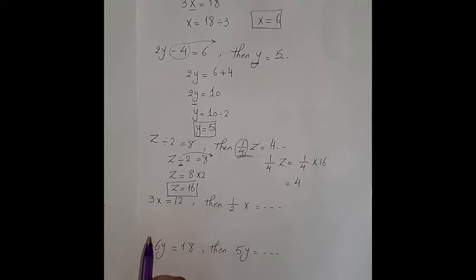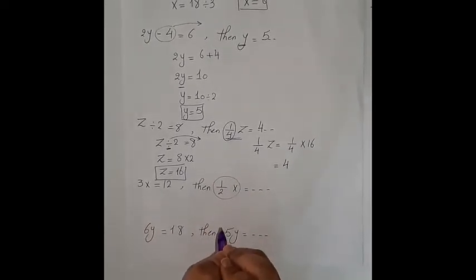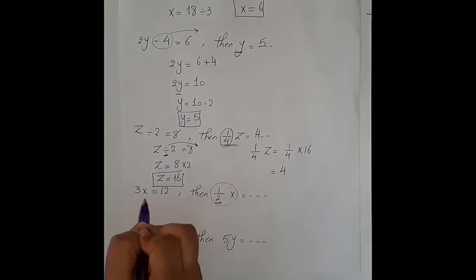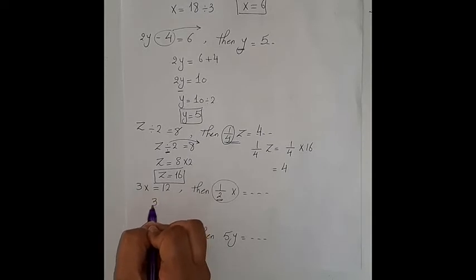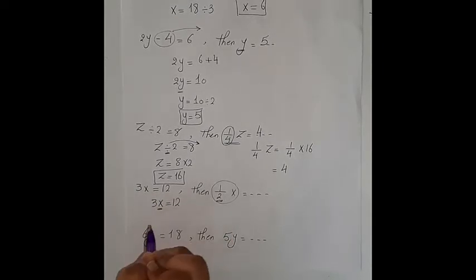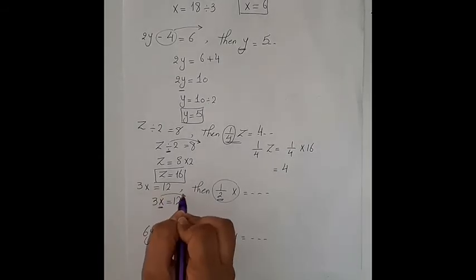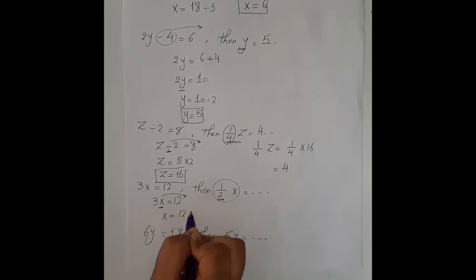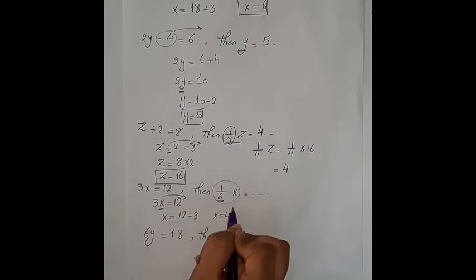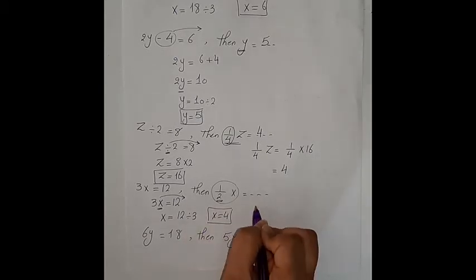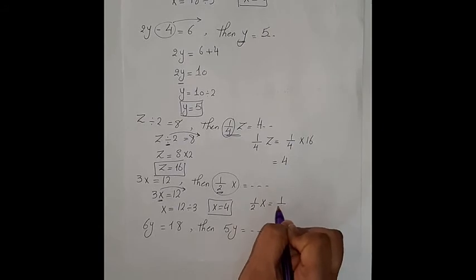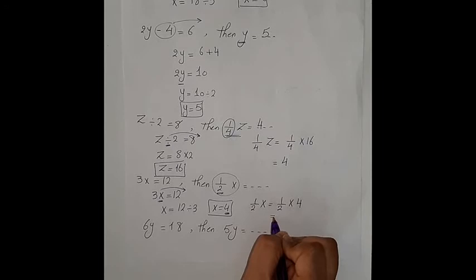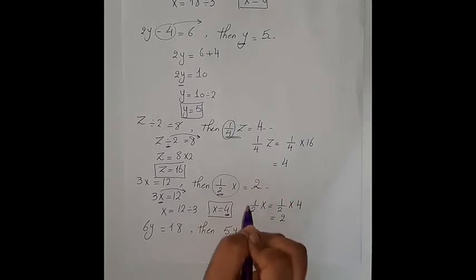Next: 3x equals 12, and I need the value of ½x, not the value of x itself. To get ½x I should first find x. 3x equals 12; since 3 is multiplied by x, the inverse operation is divide: x equals 12 divided by 3, so x equals 4. Now ½x means ½ multiplied by the value of x, which is 4. ½ multiplied by 4 equals 2, so ½x equals 2.